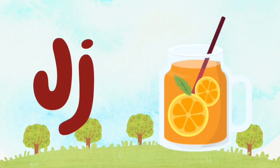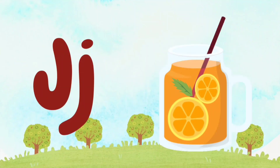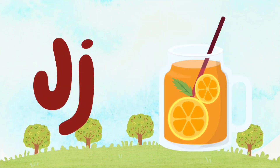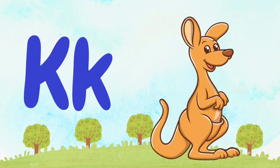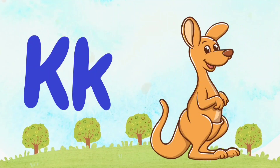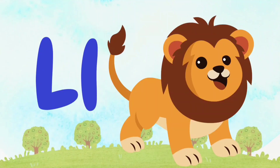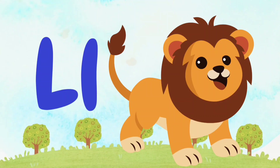J for Juice. J. J. Juice. K is for Kangaroo. K. K. Kangaroo. L is for Lime. L. L. Lime.